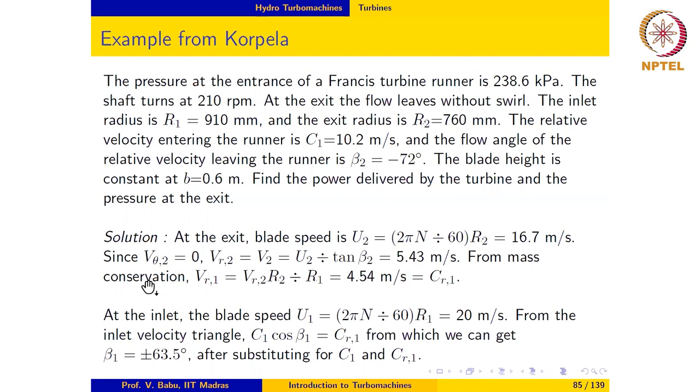From mass conservation across the exit and inlet of the rotor, we may evaluate Vr1, which gives Vr1 as 4.54 m per second. And this is the same as Cr1.